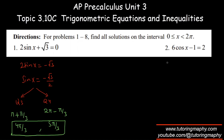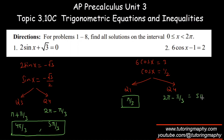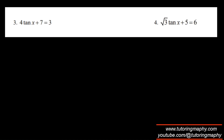Next: 6cos(x) + 1 = 3. Adding 1 to both sides then dividing by 6 gives cos(x) = 3/6 = 1/2. Cosine is positive in quadrant 1 and quadrant 4. The quadrant 1 reference angle is π/3, and swinging to quadrant 4 gives 2π − π/3 = 5π/3. So the two answers are π/3 and 5π/3.